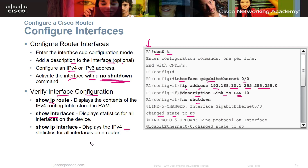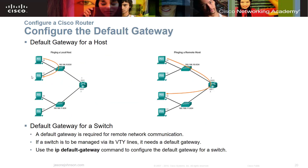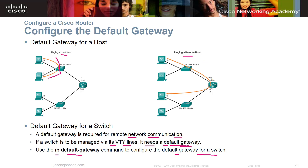When configuring the default gateway: if a router is to be a default gateway, it's required for remote network communication. If a switch is to be managed by its VTY lines, it needs a default gateway. You can use the ip default-gateway command to configure the gateway on a switch. If you're just pinging the local host the switch manages that, but if you're going outside the local network to a remote host, you have to have a default gateway.